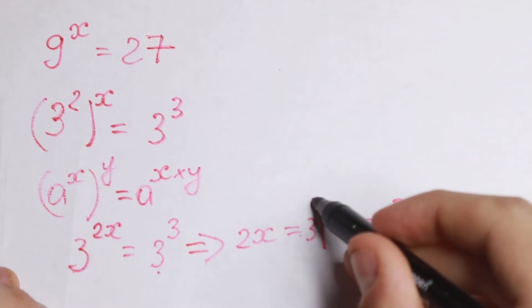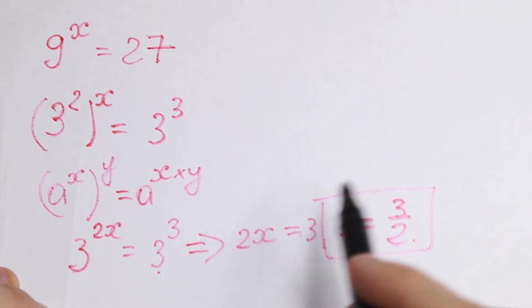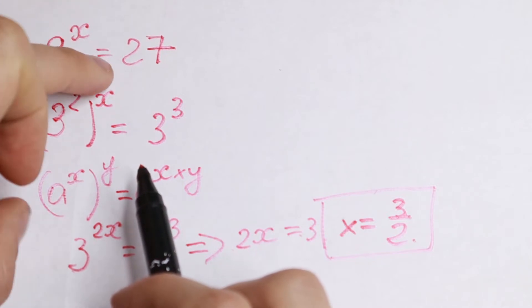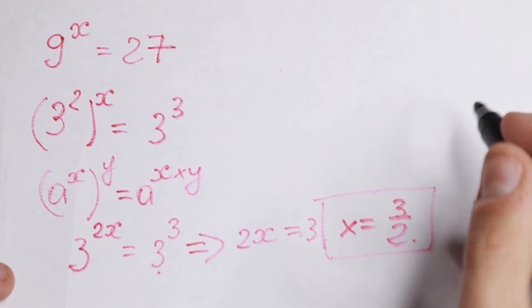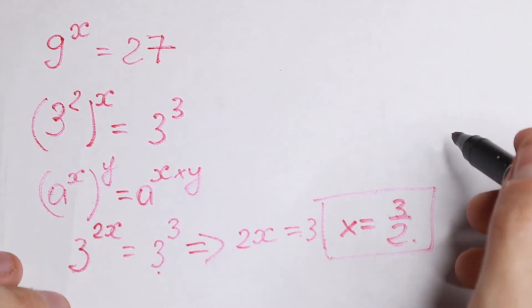Of course, we can check this answer. We can write this as square root of 9 cube, and this as square root of 27. So the answer will be the same. But this is the first case how to solve it.